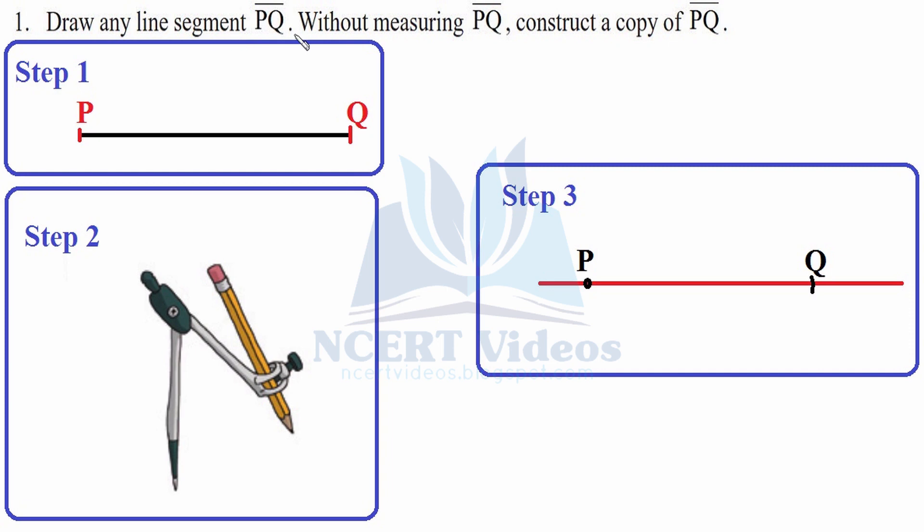First, draw any line segment PQ. Without measuring this line segment, construct a copy of line segment PQ. So step one is we have this line segment PQ. We don't know its measure and we don't even have to measure it. We are asked to construct a copy without measuring it.